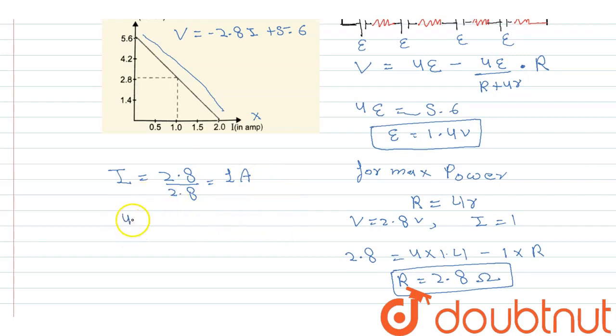Current is 1A, which equals 4 epsilon upon R plus 4 small r, which is 1. We calculated E as 1.4 and capital R is 2.8. Since 4R equals 2.8, the value of small r comes out to be 0.7 ohms.